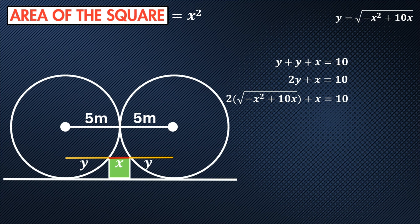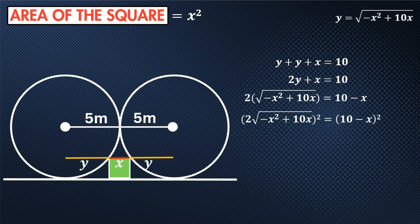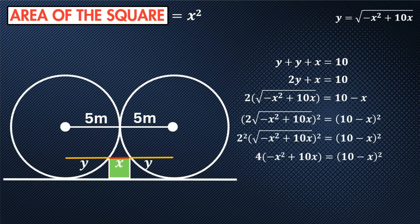Let's move x to the other side of the equation by subtracting it. So we have two times the square root of negative x squared plus 10x equals 10 minus x. To get rid of the square root, we then square both sides. This leaves us with four multiplied by negative x squared plus 10x equals 10 minus x, squared.